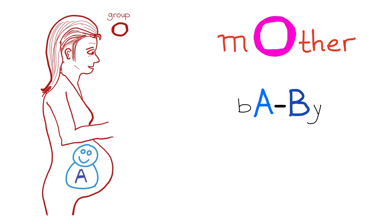So mother is O and baby is A — that's the mnemonic for ABO incompatibility causing hemolytic disease of the newborn.